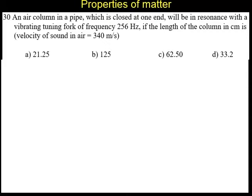Question number 30. An air column in a pipe which is closed at one end will be in resonance with a vibrating tuning fork of frequency 256 Hz if the length of the column in centimeters is. Take velocity of sound in air equal to 340 meters per second.